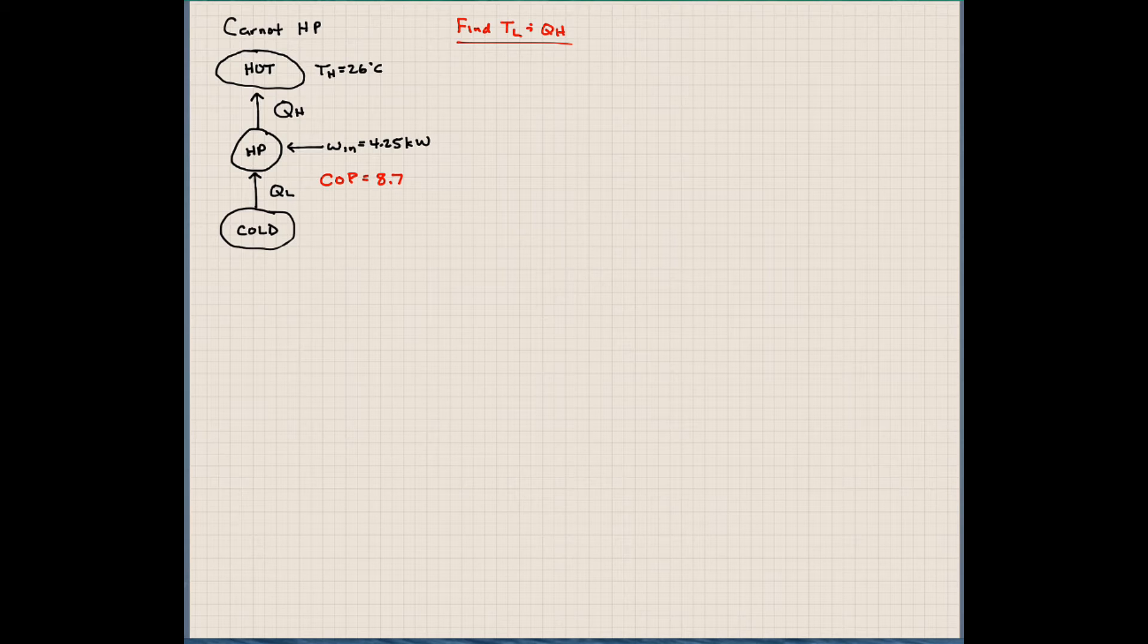and the outside temperature has some, there's some outside temperature here, which we don't know what it is. We would be heating our house by extracting the heat from that already cold temperature. Now the coefficient of performance for this heat pump is 8.7. And our goal here is to find the low temperature source and the amount of heat that's transferred to the high hot temperature source here.